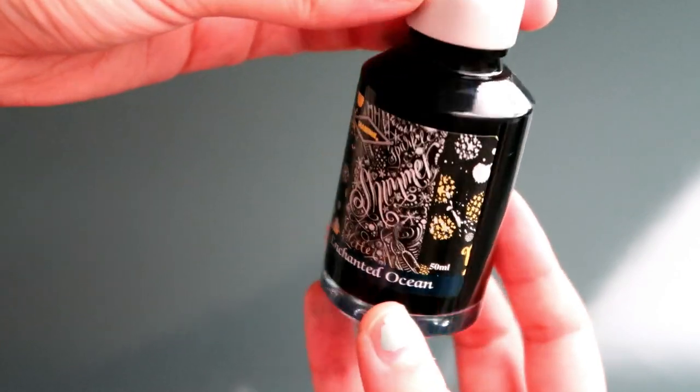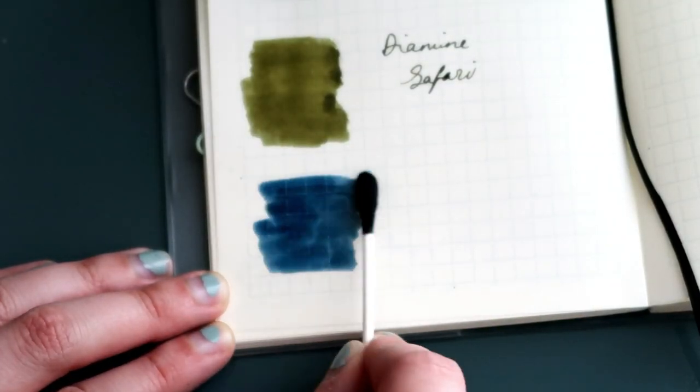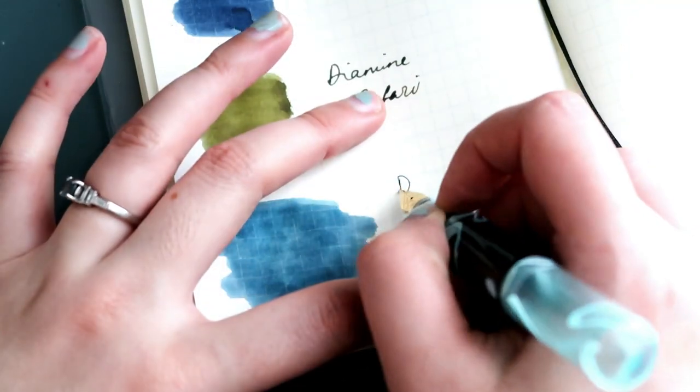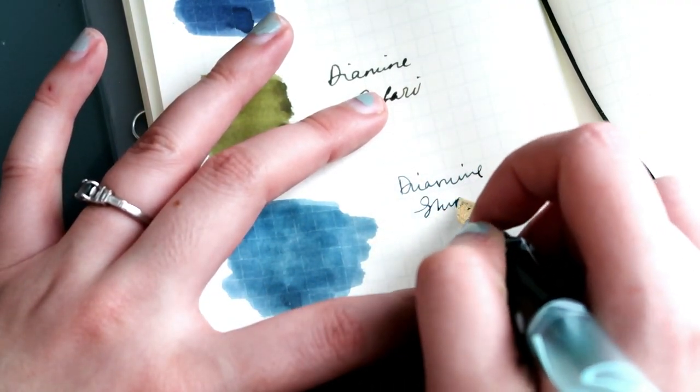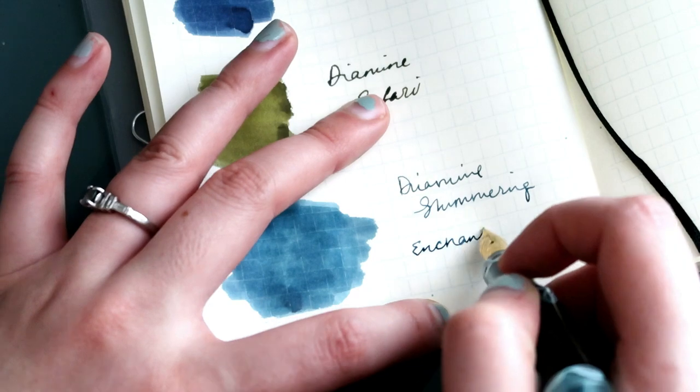This one is one of their shimmering inks called Enchanted Ocean. I like it, but it's not one of my favorites. It doesn't look as neat when I write with it. There is a shimmer to it, but you can barely notice it on camera.